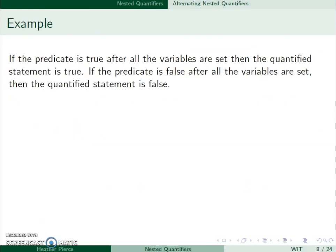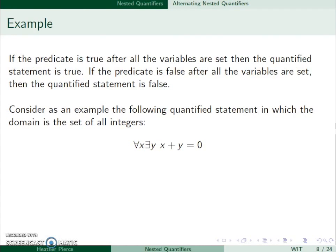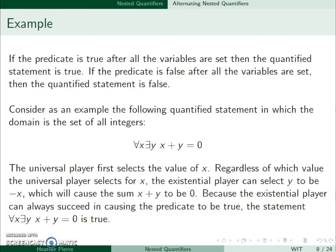If the predicate is true after all variables are set, then the quantified statement is true. If the predicate is false after all the variables are set, then the quantified statement is false. Let's consider this statement: for all x, there exists a y such that x+y=0. The universal player will go first, since the universal quantifier comes first in this statement. And whatever value they choose for x, the existential player can select y to be negative x, so the sum will always be 0. The existential player can always succeed. It doesn't matter what the universal player picks for x, the existential player can just pick the negative of that. So this is always true.